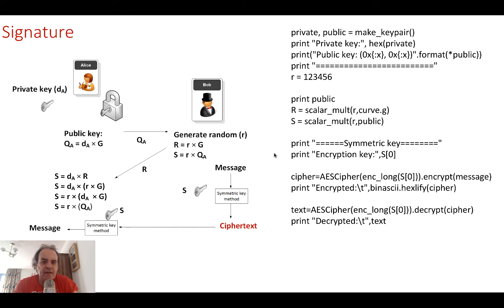We then derive S as the x value of the S value that we've calculated. We'll then use AES encryption with this S value that we've calculated, taking only the x coordinate, encrypt it, and then decrypt it back with the same key.